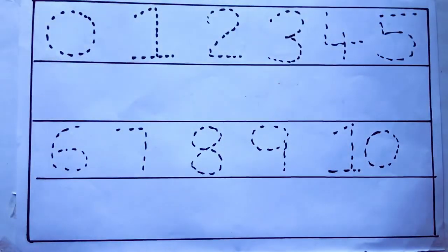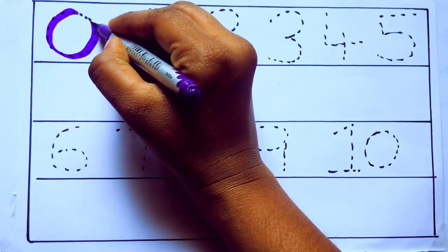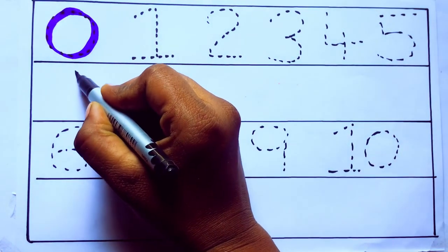Let's draw numbers. Violet color 0, Z-E-R-O. Orange color 0.